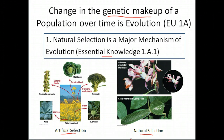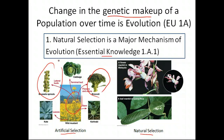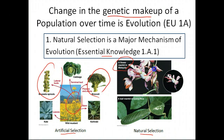In artificial selection, there's essentially a designer — usually man — hand-selecting organisms for various traits, guiding an organism's development. For example, from the wild mustard plant you can artificially select to create broccoli, which focuses on the flowers and stems, or Brussels sprouts, which focuses on the lateral buds. Natural selection, on the other hand, is where nature selects for organisms best suited for their environment — like this mantid blending in through camouflage.